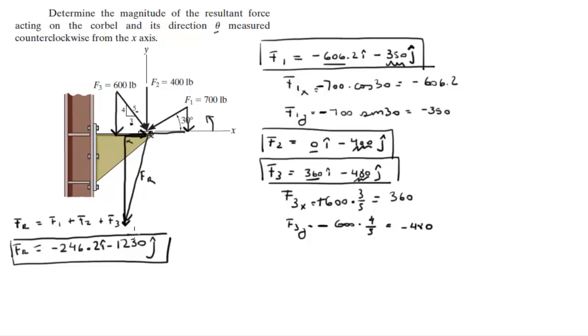This is the Cartesian vector form of the resultant force. What they want is the polar form which has the magnitude and the angle. So to find the magnitude of the resultant force, you square root the x component squared plus the y component squared. You plug them into here and you're going to get that this is equal to 1254.4. This is the magnitude.